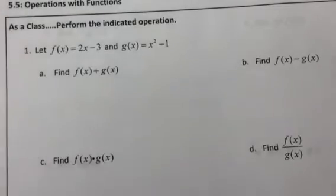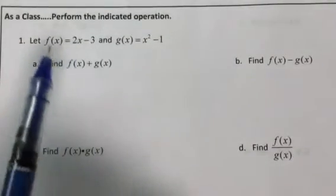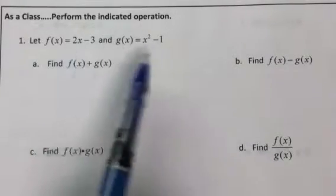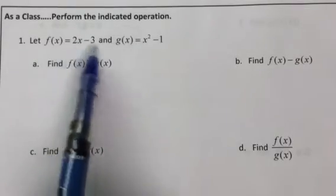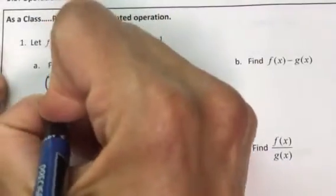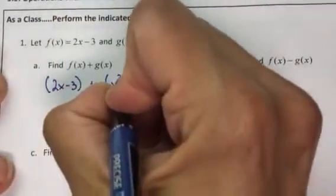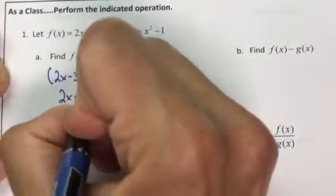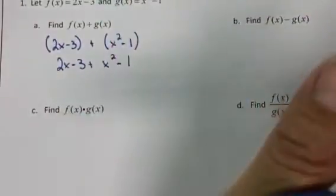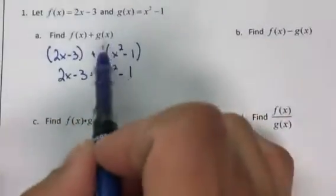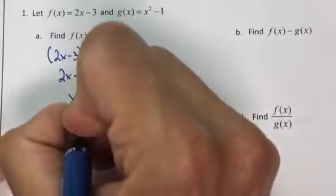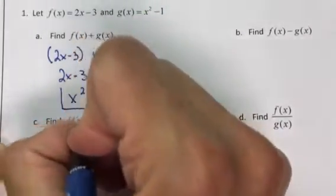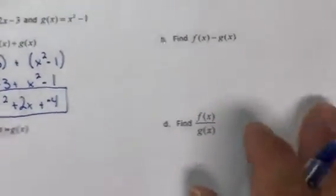The next part of the final covers adding, subtracting, multiplying, and dividing functions. To add f(x) and g(x), just combine them — parentheses are helpful but often not necessary — and combine like terms. x² won't combine with anything, neither will 2x, but -3 and -1 combine to make -4.